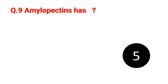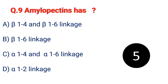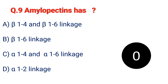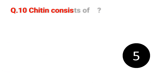Question 9. Amylopectin has: A. Beta-1,4 and beta-1,6 linkage. B. Beta-1,6 linkage. C. Alpha-1,4 and alpha-1,6 linkage. D. Alpha-1,2 linkage. The answer is C. Alpha-1,4 and alpha-1,6 linkage.